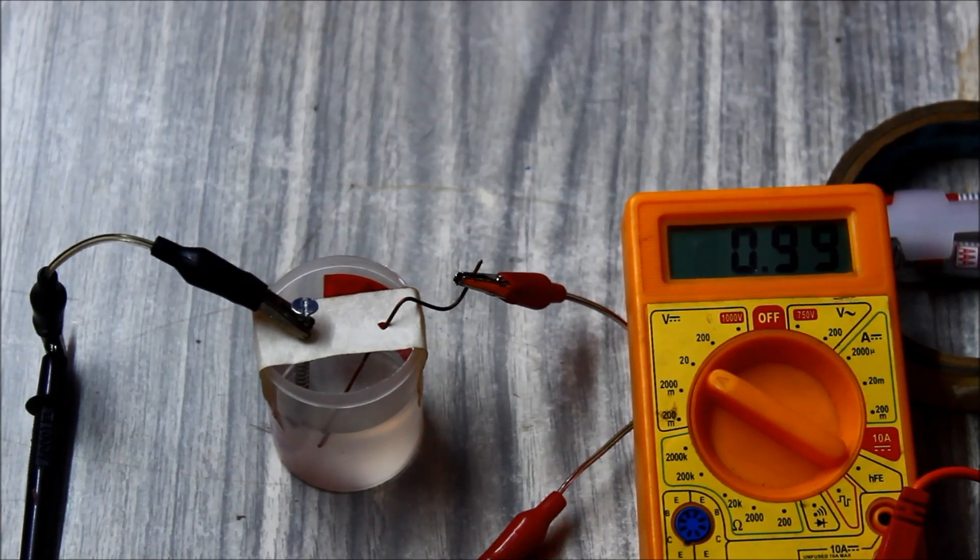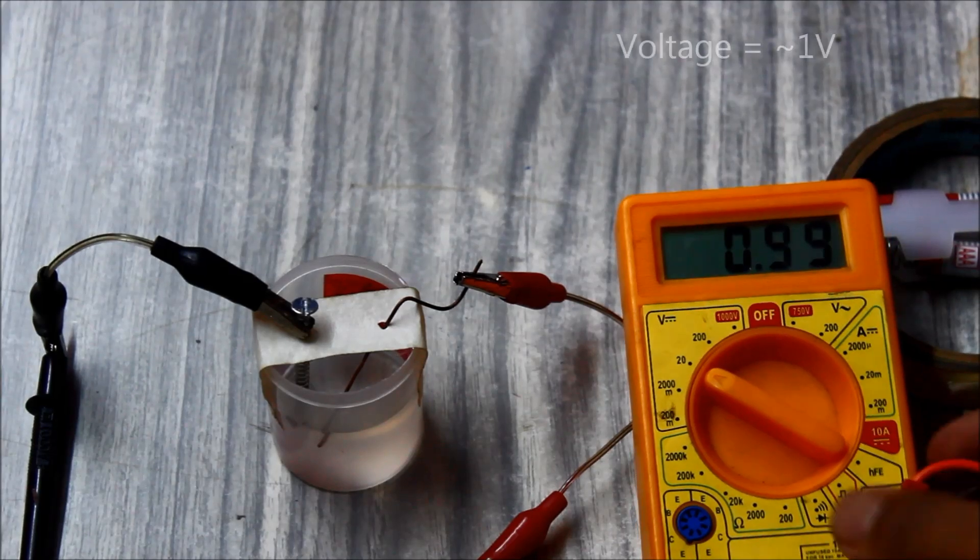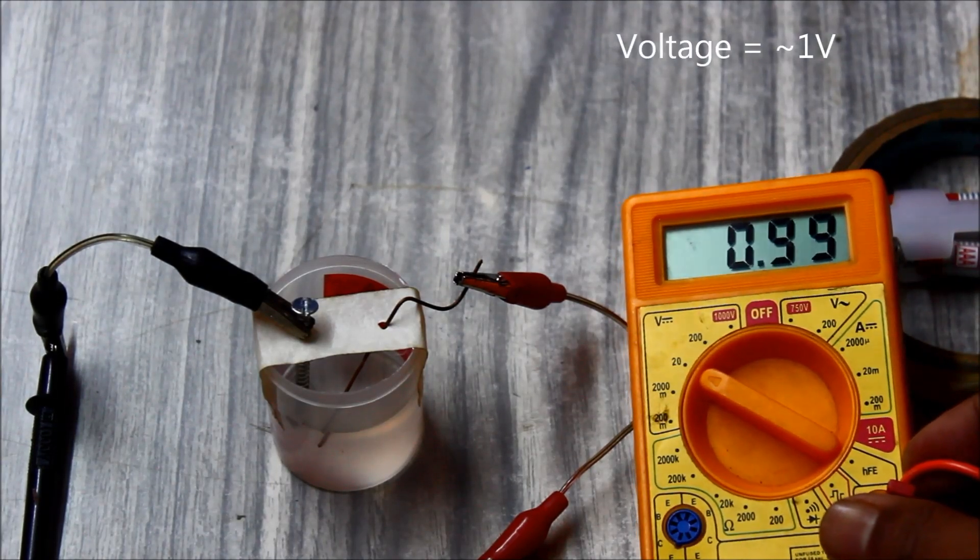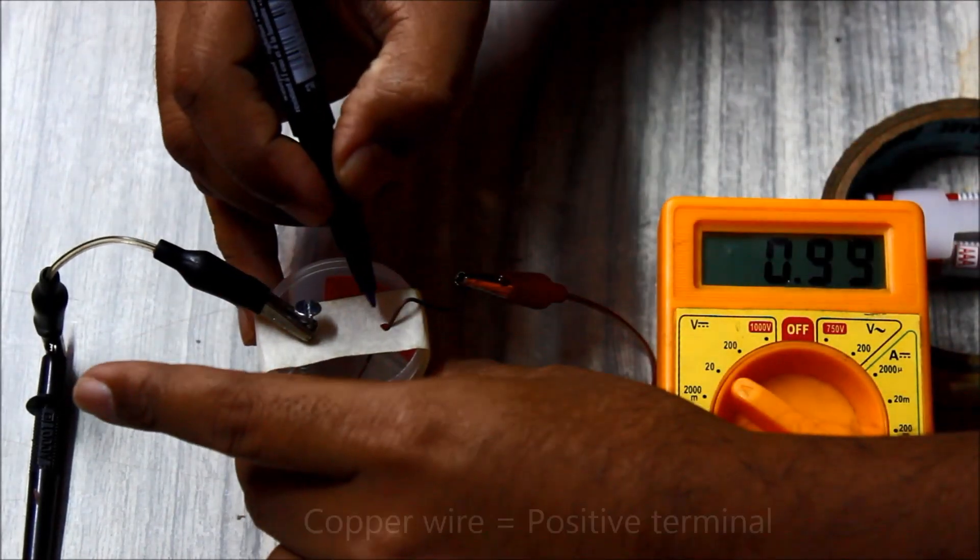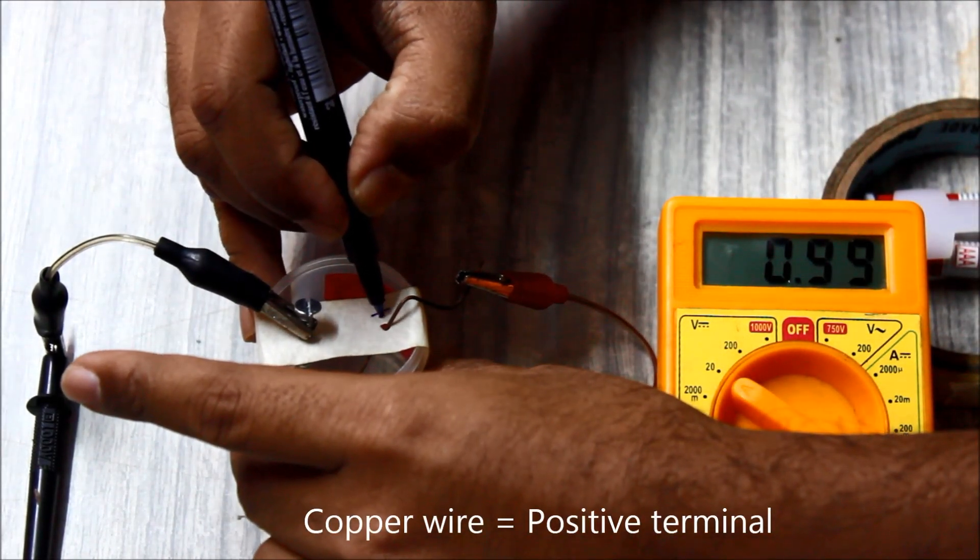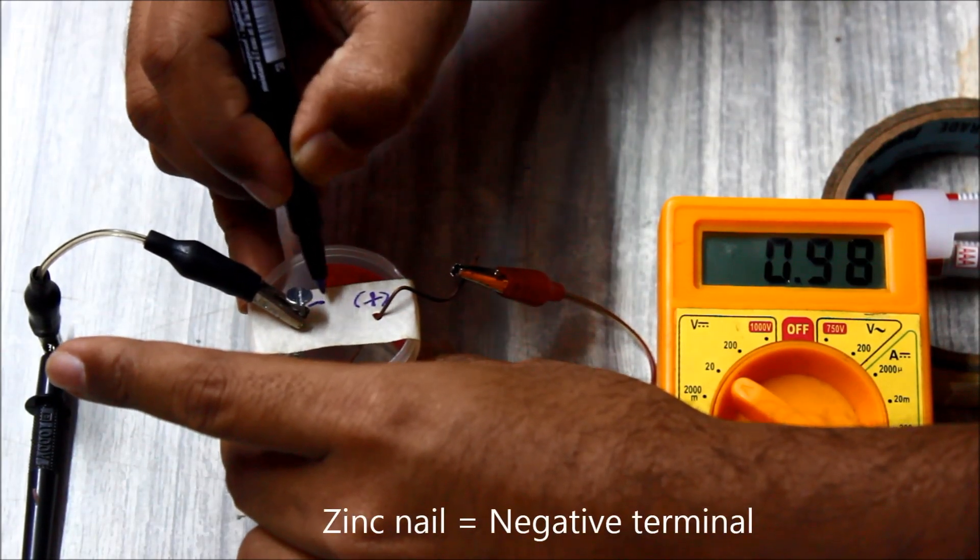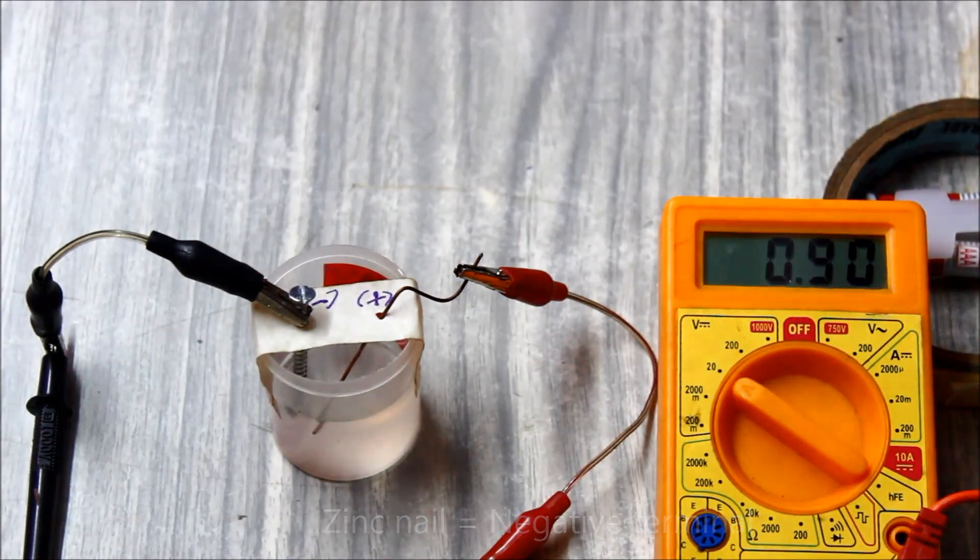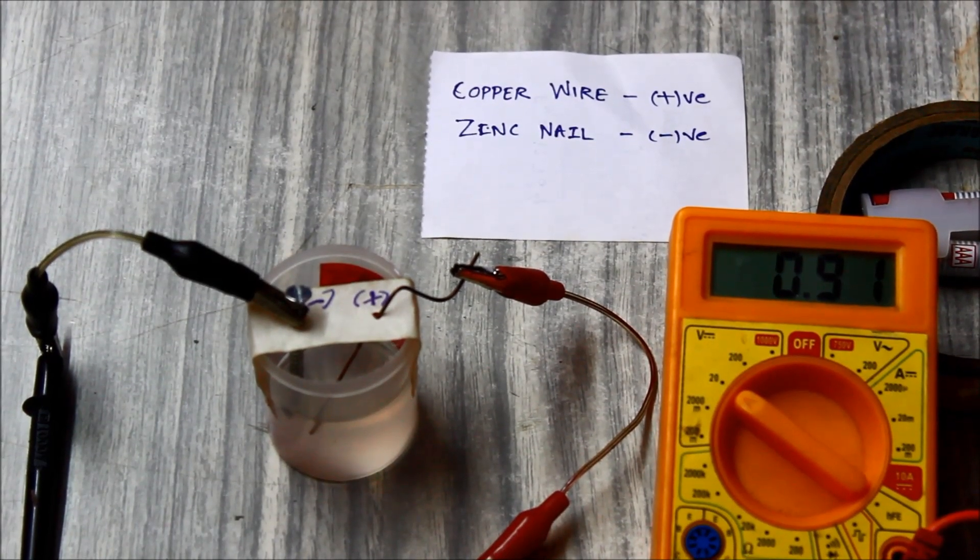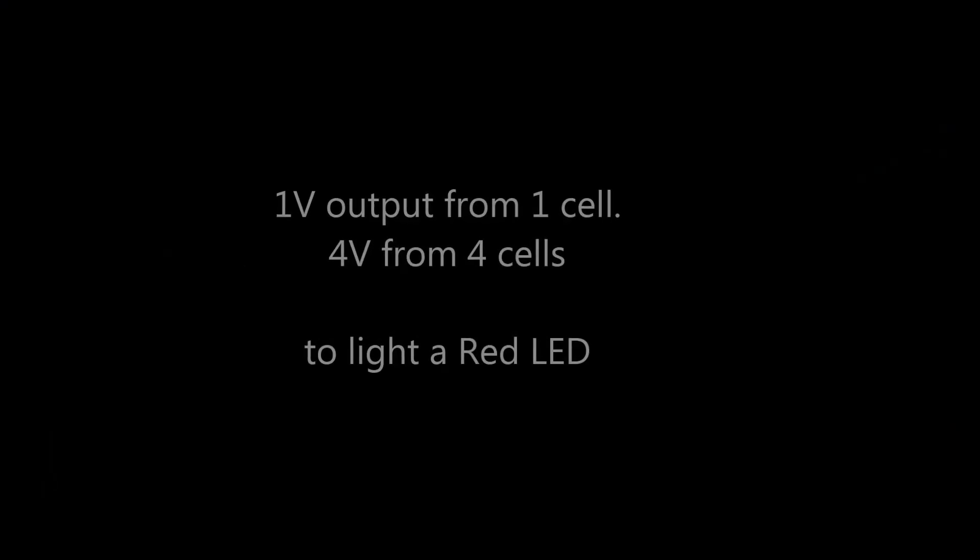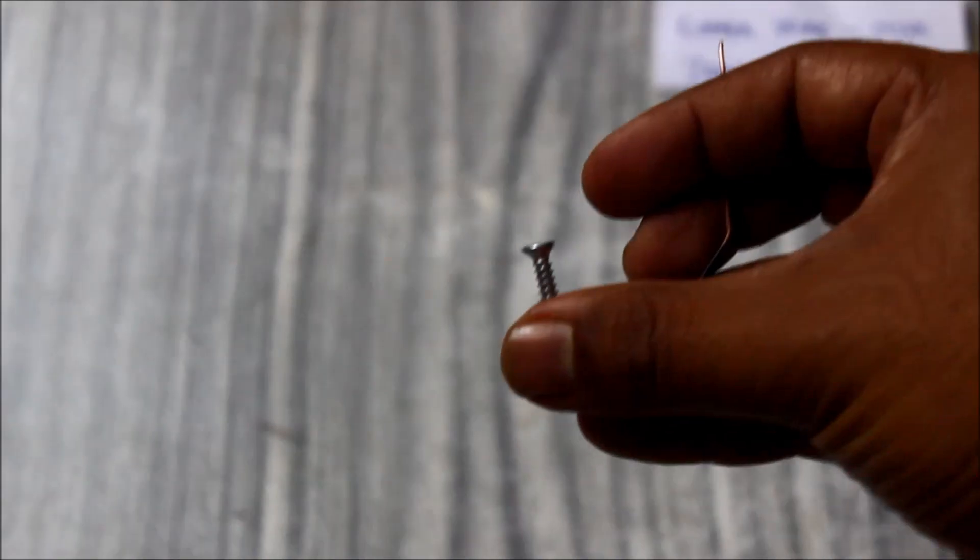It's giving plus 0.99 volts, that is approximately 1 volt. I guess four such compartments would be necessary to make an LED glow. Let's mark the positive terminal with positive and negative with negative. Here the zinc nail is the negative terminal and copper is the positive terminal.